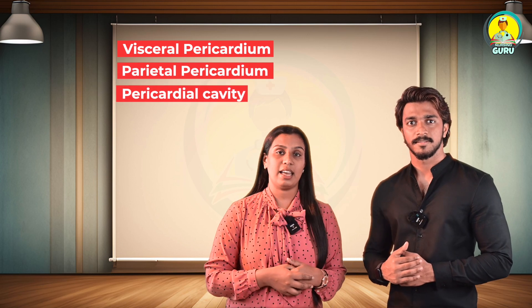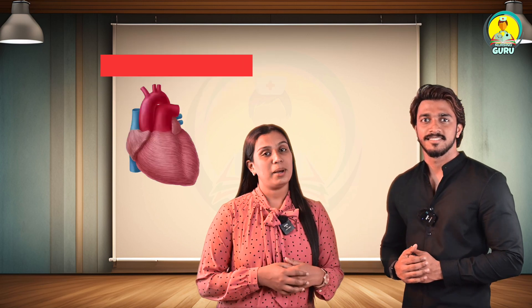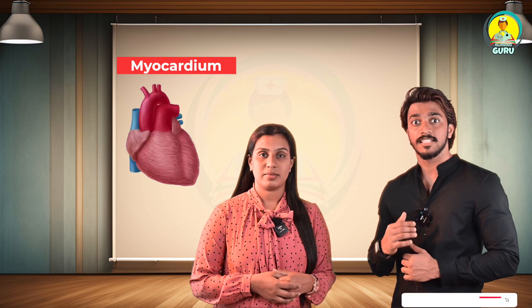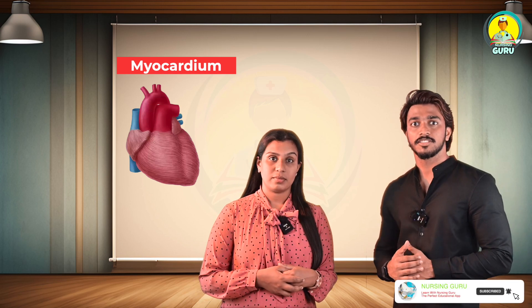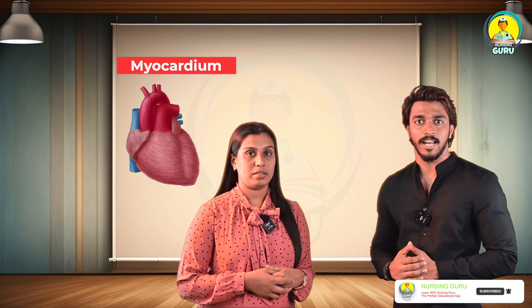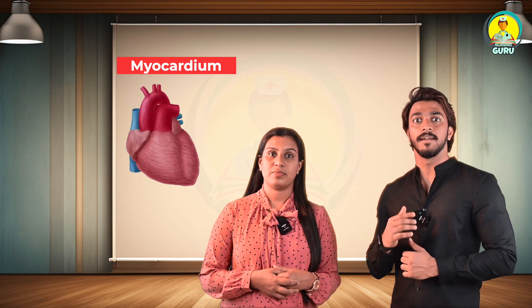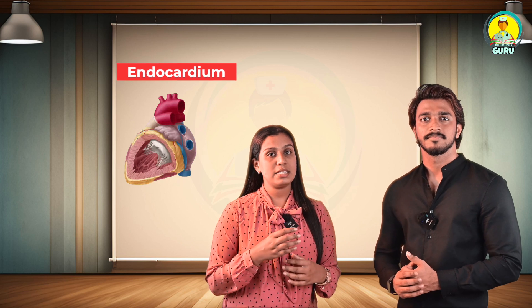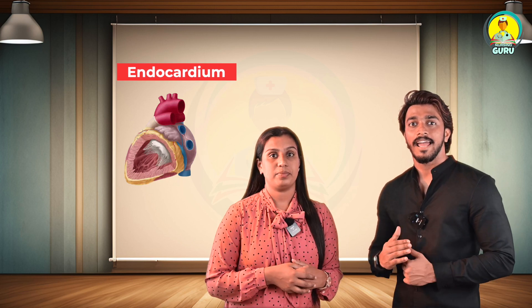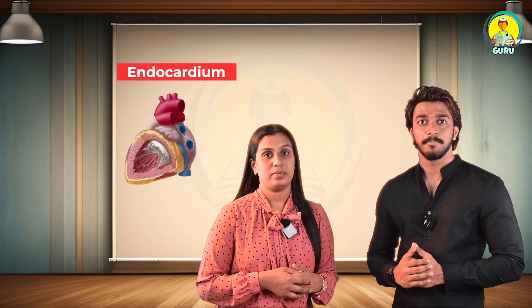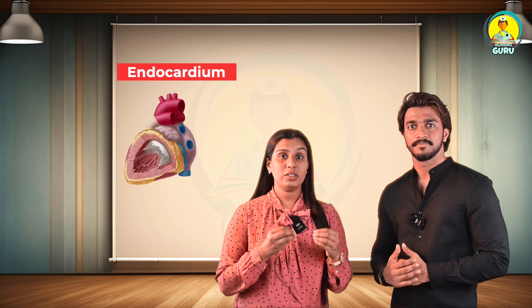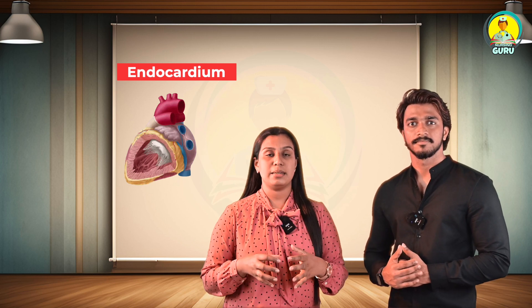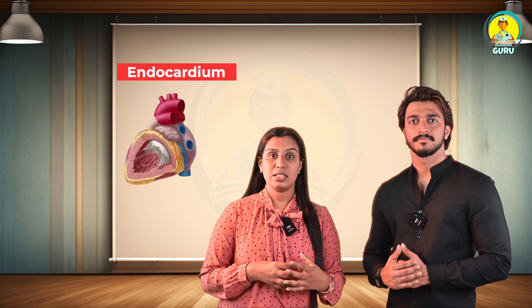The second layer is the myocardium — the middle and thickest layer of the heart. It contains the muscle fibers responsible for pumping; contraction of this layer allows blood to be pumped through the blood vessels. The third layer is the endocardium, the innermost and deepest layer of the heart. It lines the heart chambers and valves with a smooth, thin lining to reduce friction of blood flow. The cardiac conduction system is also located in this layer.